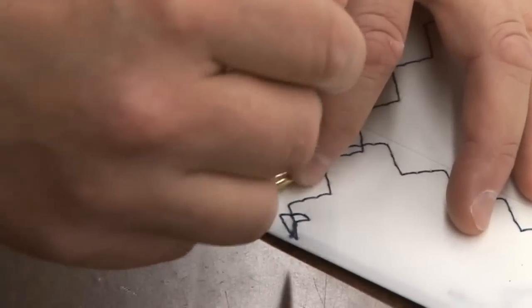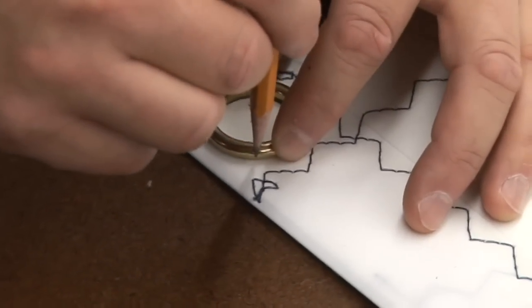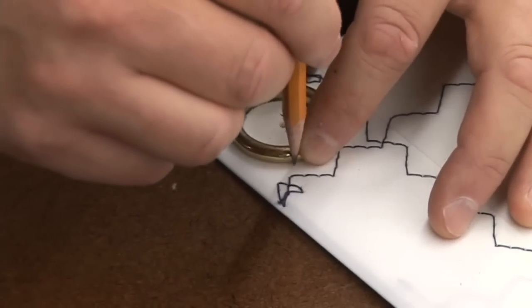Then we also want to draw around the outer side and hold your pencil straight up and down for this, which will make it about a little bit bigger than the outer part of the ring.